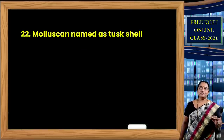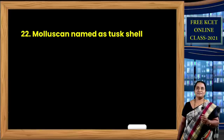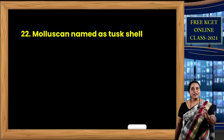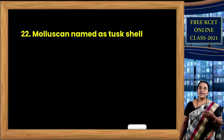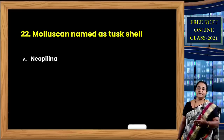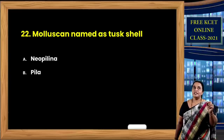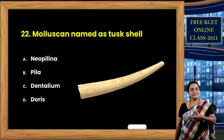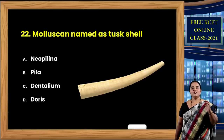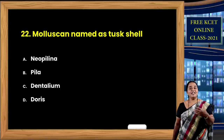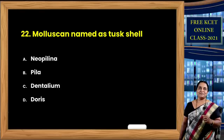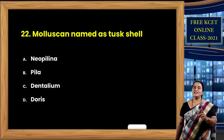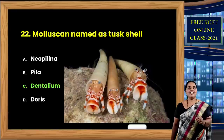Question 22: The animal belongs to phylum Mollusca. Molluscs are named for soft body protected by hard shell; they are classified depending on shell development. The tusk shell is shaped like a tusk — like an elephant's tooth — and the animal living inside the tusk shell is Dentalium. Out of options neopilina, pila, dentalium, doris — the correct option is C, dentalium.